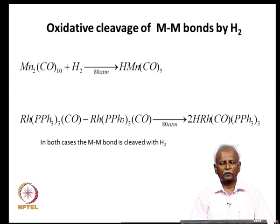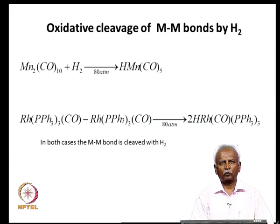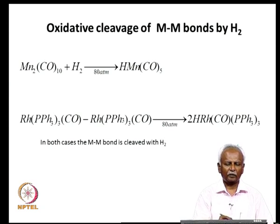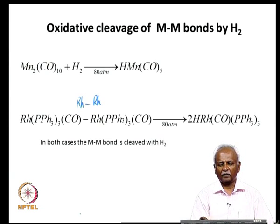The second class — molecules which undergo oxidative cleavage of the metal-metal bond — is shown here where a manganese-manganese bond is cleaved with hydrogen. These reactions require slightly higher pressure of hydrogen; in this case about 80 atmospheres is required. HMn(CO)₅ is a monohydridic metal complex which can carry out reactions that the simple system cannot. There is also a rhodium-rhodium bonded system where the two rhodium atoms are bonded together. This rhodium-rhodium bond is cleaved and a rhodium-hydrogen bond is formed, enabling reactions that dihydrogen itself will not carry out.